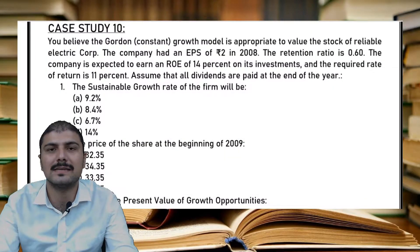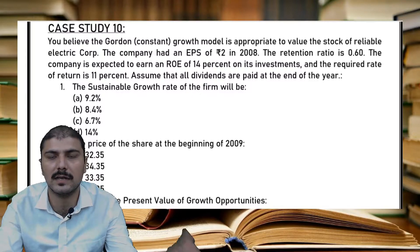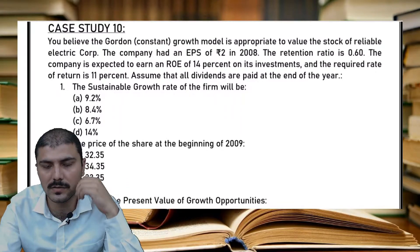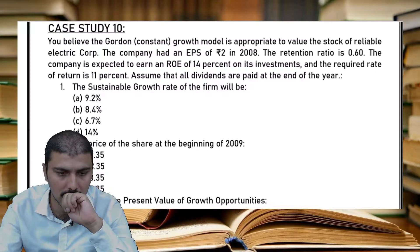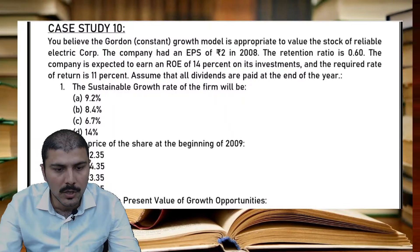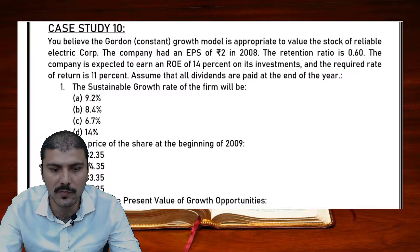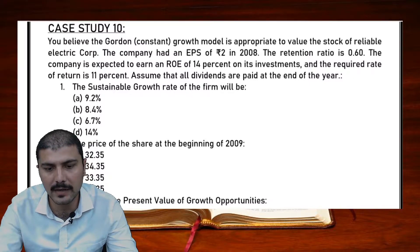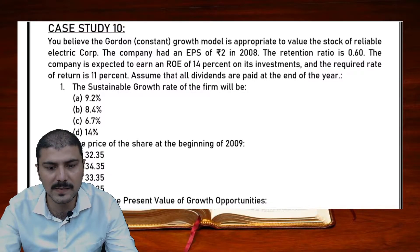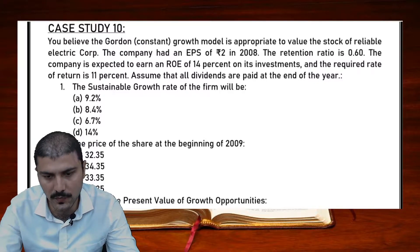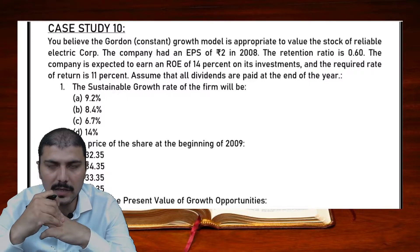Good morning members. This is the 10th video in the series of case studies for the registered value exam. This is also an important case study asked many times in exams, so please pay equivalent attention. You believe that the Gordon constant growth model is appropriate to value the stock of a reliable electric corporation. The company had an EPS of rupees 2 in 2008, the retention ratio is 0.60, the expected ROE is 14%, and the required rate of return is 11%. Assume all dividends are paid at the end of the year.